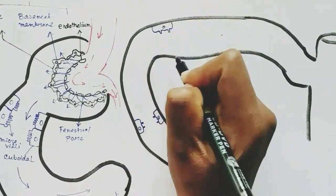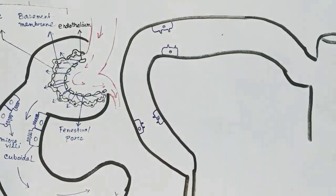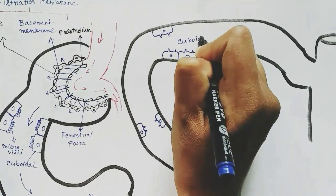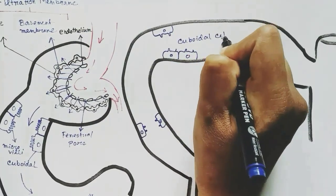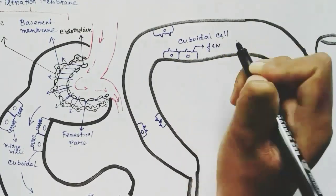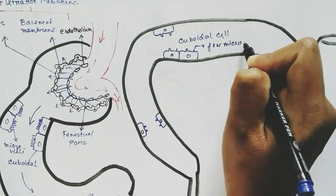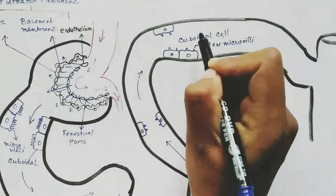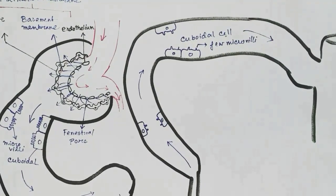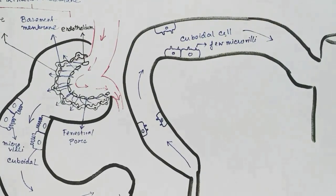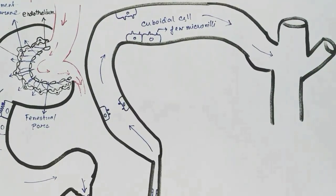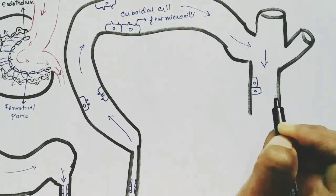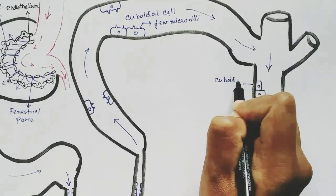The thick part of Henle's loop and the distal convoluted tubule have cuboidal cells with very few microvilli. In this region, secretion of substances occurs. The collecting duct has some cuboidal cells and columnar cells.